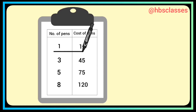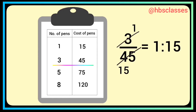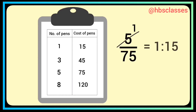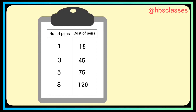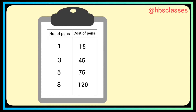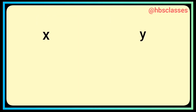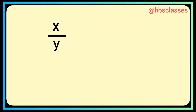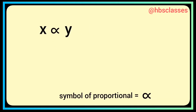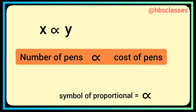Let's check the ratio of number of pens to the cost of pens. In the first case the ratio is 1:15. In the second case, 3/45 equals 1:15. In the third case again the ratio is 1:15, and in the fourth case also the ratio is 1:15. In all four cases the ratio is equal — the ratio is constant. So two quantities x and y change together such that the ratio of their corresponding values remains constant; we say x and y are in direct proportion. The number of pens is directly proportional to the cost of pens.